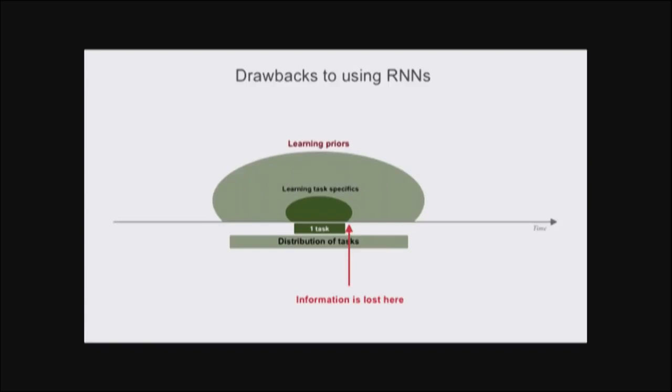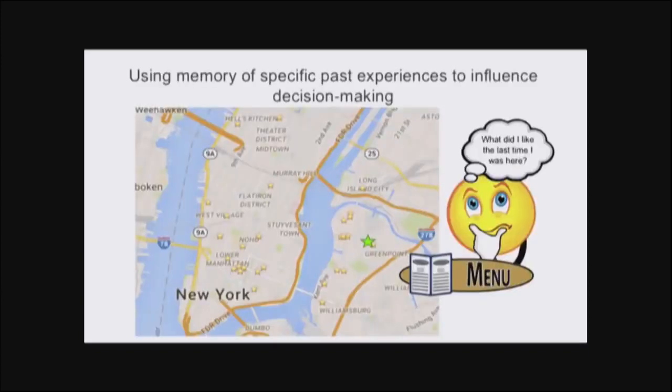One drawback with using RNNs to learn inductive biases and task structure is that you can't learn anything that extends beyond the length of your unroll. The hidden state is reset at the beginning of every episode, so you have effectively this time horizon in which you lose information. In addition, learning priors is useful when tasks we encounter are randomly drawn from some distribution. But in real life, we often encounter the same situations over and over again, and it'd be really useful to have access to these past experiences. For example, we often go to the same restaurants again and again in our city. When we go back to the same restaurant and we're trying to decide what to order, we usually use our specific memories of the last time we were there and how we felt about the meal we ordered.